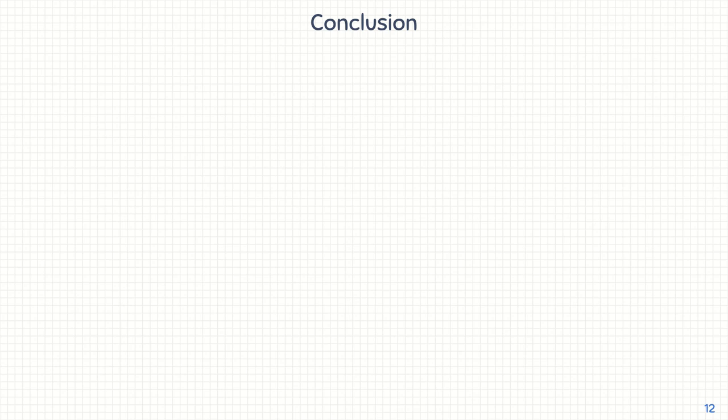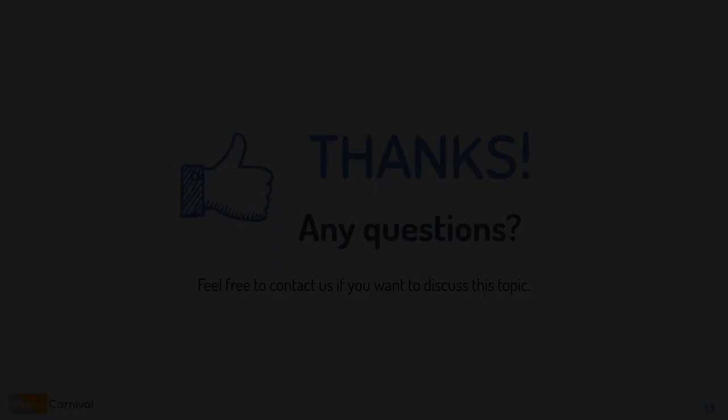In conclusion, we conducted an empirical study about the effect of compile time options on software performances. The key takeaway is that compile time configuration matters. We showed it is possible to tune a software system at compile time, though with a simple and perhaps naive example. As future work, we could apply more advanced state-of-the-art methods to this problem. This concludes our presentation — thank you for listening, and see you all in September.